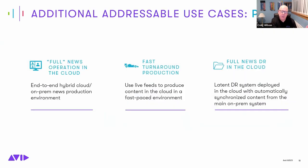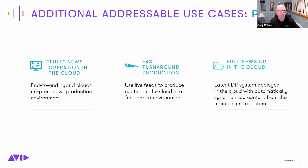Building on phase one use cases, the key addition in phase two is the ability to do a full newsroom operation in the cloud — creative workflows in the cloud connecting back to on-premises studio facilities. Fast-turnaround productions also become much easier using that studio infrastructure. And as Regis mentioned, disaster recovery systems can run in the cloud as well. These are just a selection; there are many other use cases possible as part of what we're doing.